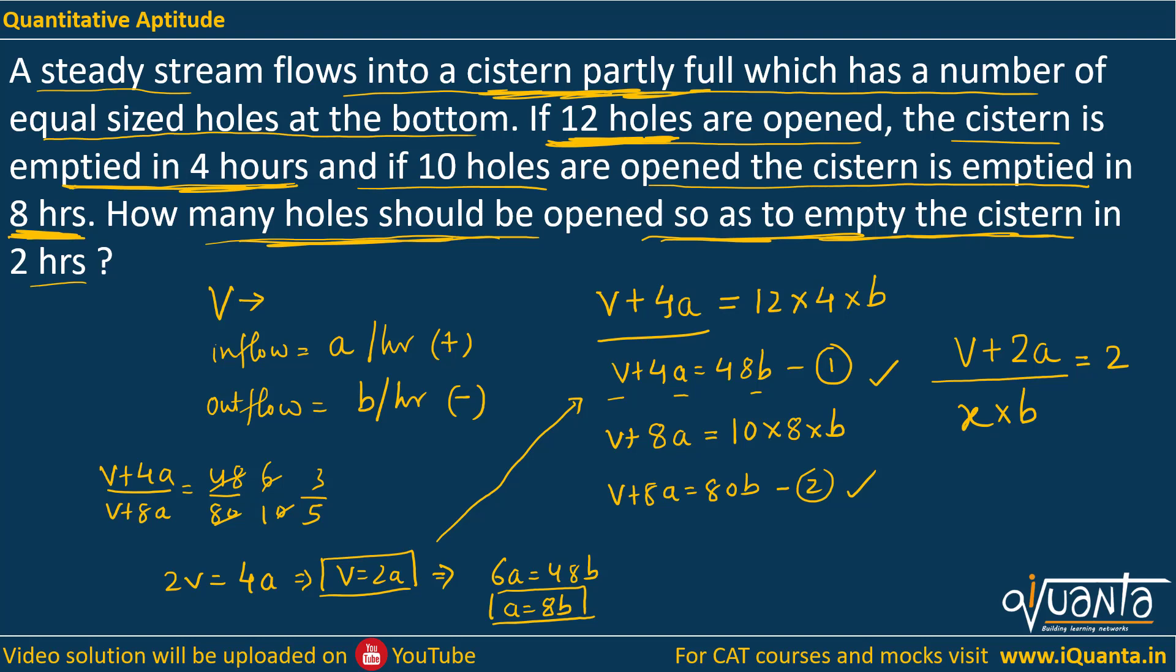Let me put all the values in terms of A. V equals 2a, so in numerator we will be getting 2a plus 2a that gives us 4a upon 2 times x times b. We need to find out x, the number of holes. B equals A by 8, so A by 8 will be multiplied. This gives us x equals 32 by 2, that means 16. There should be 16 holes at the bottom if we want to empty the cistern in 2 hours.